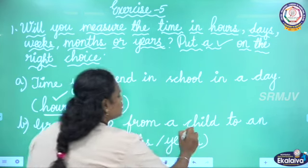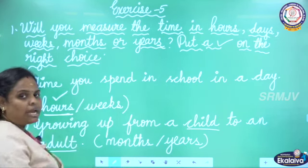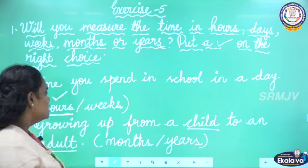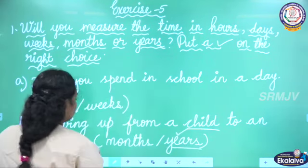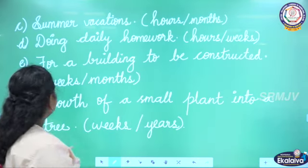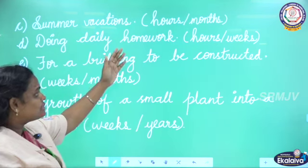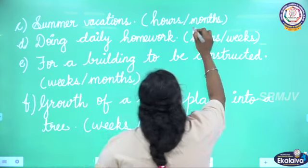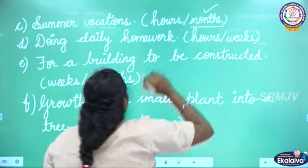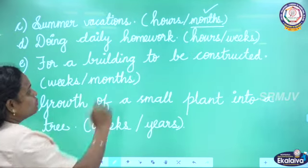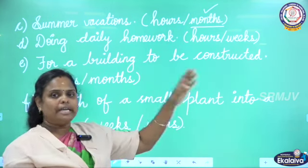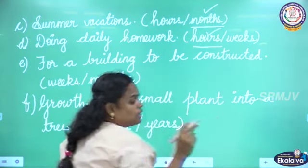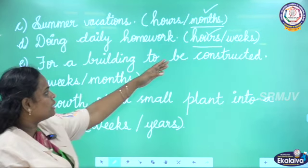Next: growing up from a child to an adult. That takes years, so the answer is years. Next: summer vacations. Summer vacation is about one month — May month — so the answer is months. Next: doing daily homework. You sit and do it in one or two hours, so the answer is hours.